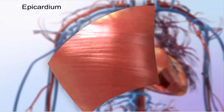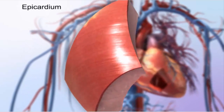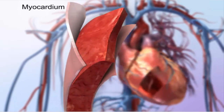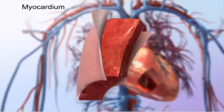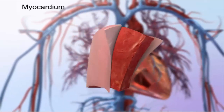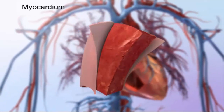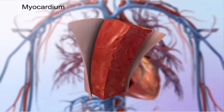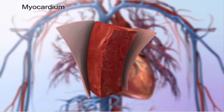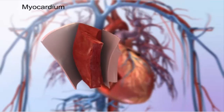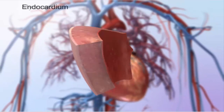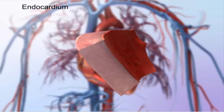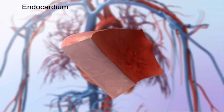Beneath the epicardium lies the thick cardiac muscle of the myocardium. The myocardium is responsible for the heart's pumping action, making powerful continuous contractions possible. This striated tissue contracts involuntarily in response to signals from the heart's own conduction system.